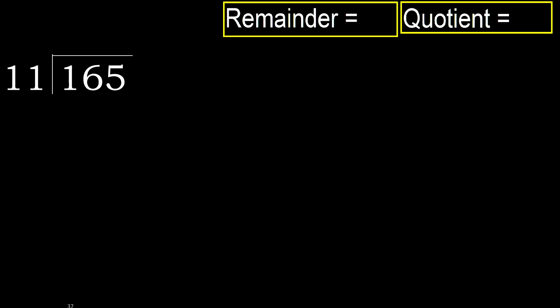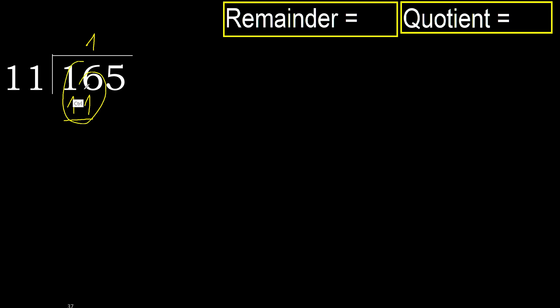165 divided by 11. 1 is less, therefore next — 16 is not less. With 16, 11 multiply by which number is nearest to 16 but not greater? 11 multiply by 2 is 22, which is greater. 11 multiply by 1 is 11, which is not greater. Subtract.